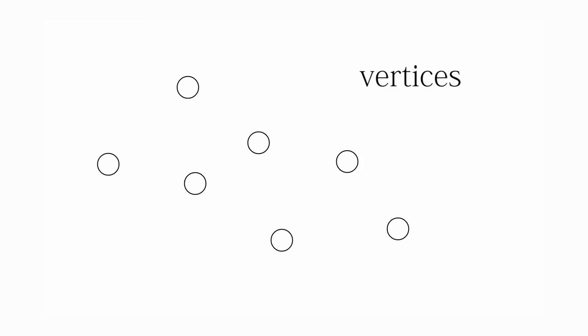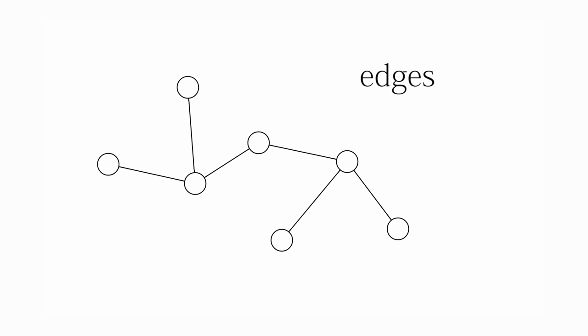A graph has two parts. The first part is a set, which is just any group of things. The second part is a relation represented by edges, which are connections between vertices. For instance, you could use a graph to represent you and your friends on Facebook. You and your friends would be the vertices, and your friendships would be the edges. When two vertices are connected by an edge, we say that they're adjacent.